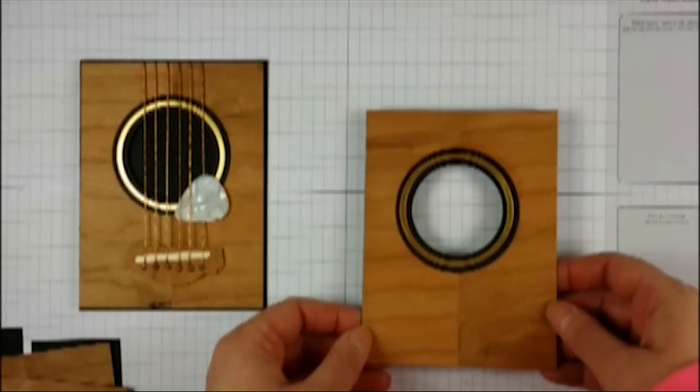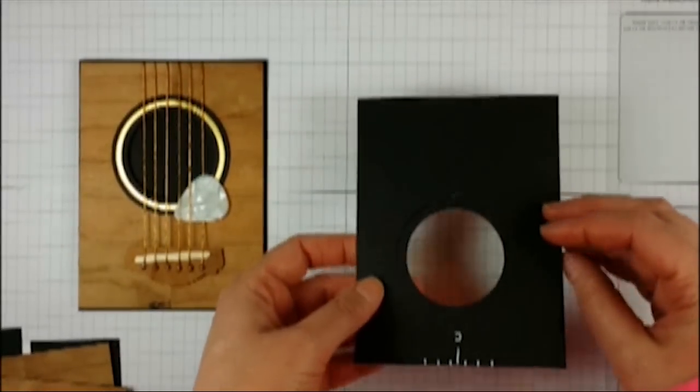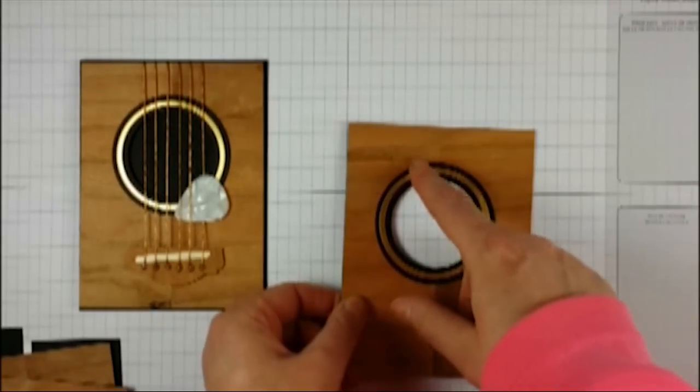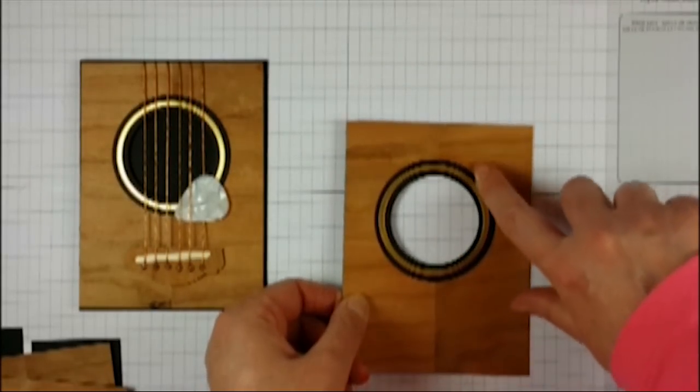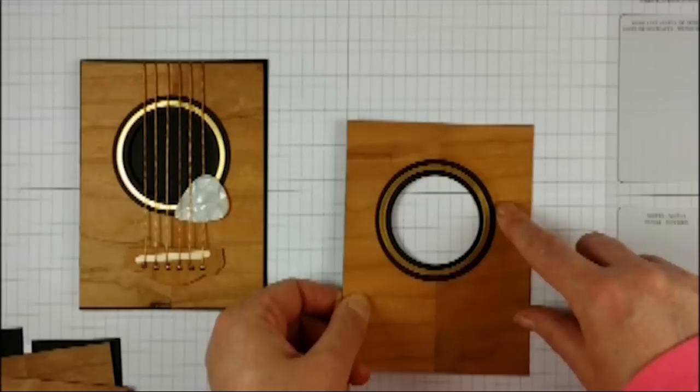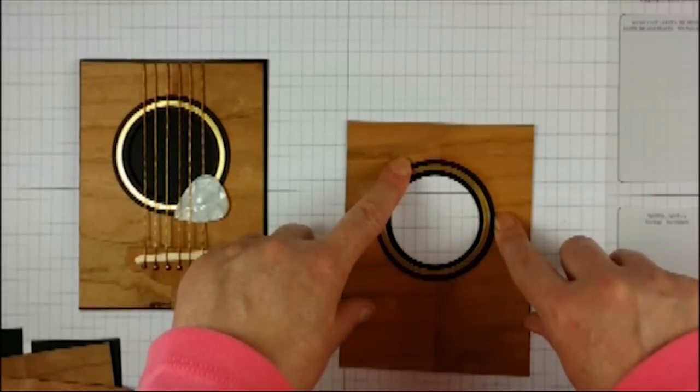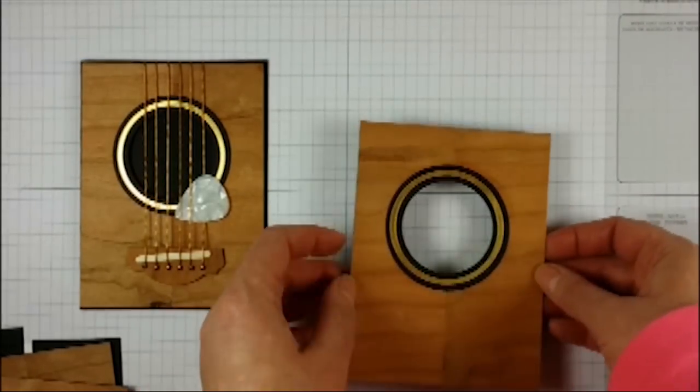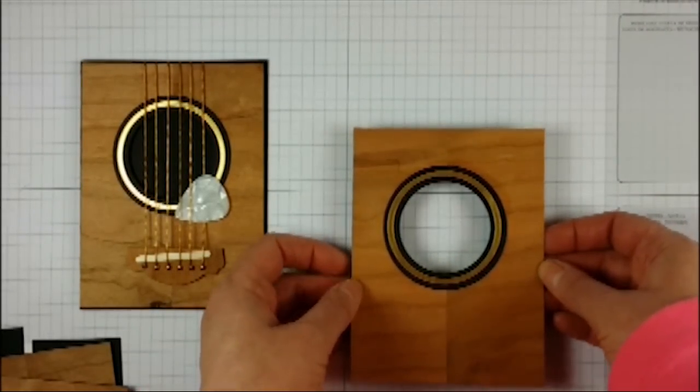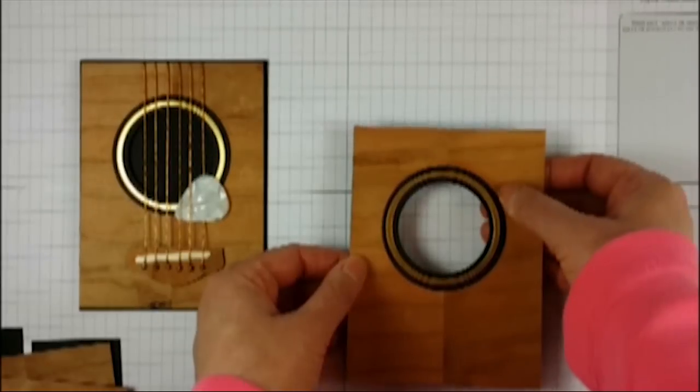You'll notice right here, be careful when you're gluing down because I used too much glue and it oozed out a little bit and left a mark. You want to be very careful about that.